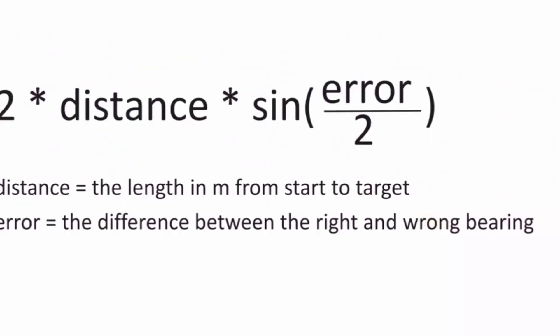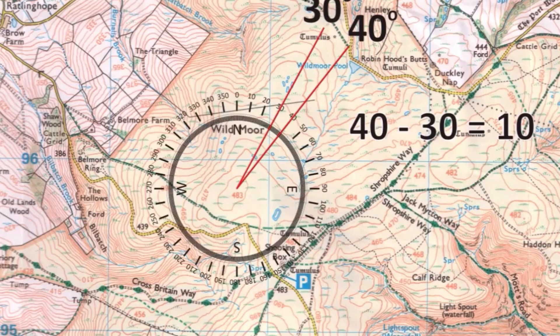So this is the function: it is 2 times the distance, times the sine of the error divided by 2. As you hopefully remember from school, that's just a derivation of the standard circle arc theorem. In this case they should have walked on 40 degrees but they actually walked on 30, so the error is 10.